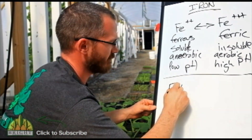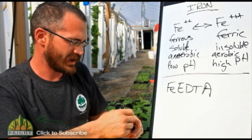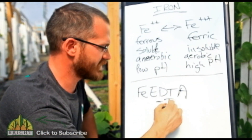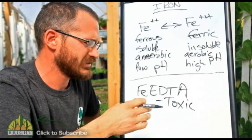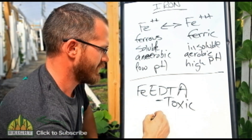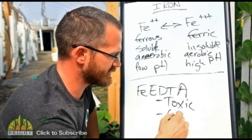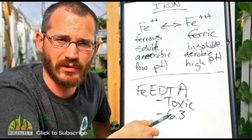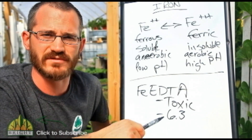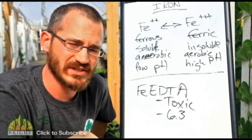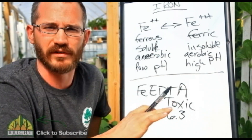The most common chelated iron out there is Fe-EDTA. I do not recommend this — it is the worst chelated iron to put in your system for a lot of different reasons. First of all, it's toxic; it's actually used as an herbicide to kill certain plants. Another reason is that it's only stable up to a pH of about 6.3. We're not going to put a toxic substance in our system, and something that only works up to pH 6.3 is often exceeded. Don't waste your money on it.